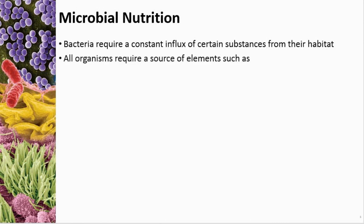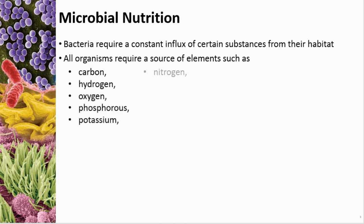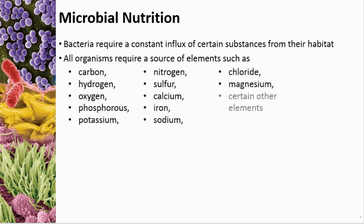All organisms require certain similar elements, such as carbon, hydrogen, oxygen, phosphorus, potassium, nitrogen, sulfur, calcium, iron, sodium, chloride, magnesium, and a few other things. In humans, there are about 24 elements contained in a human organism.